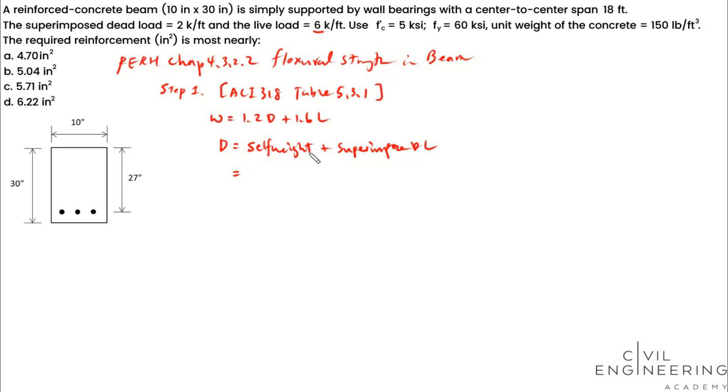So in order to calculate self-weight, you need to determine the cross-section of the beam. That's 30 times 10 inches, convert into square foot, times the unit weight of the concrete, 150 pounds, which is also 0.15 kip per cubic foot, then plus your superimposed dead load, 2 kip per foot. So you're getting 2.3125 kip per foot. If you plug it back in, 1.2 times 2.3125 plus 1.6 times 6, you're getting 12.375 kip per foot. This is your uniform distributed load.